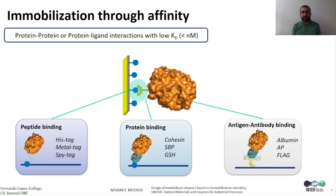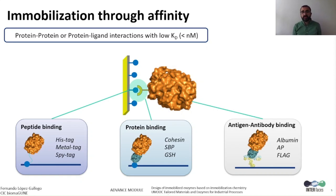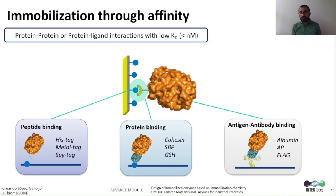For immobilization through affinity tags, we can have peptide tags such as the well-known His-tag, but also other tags for selective binding on metal surfaces, or the SpyTag that makes an irreversible bond on surfaces functionalized with the protein domain named SpyCatcher. Another type of tags are protein-based domains like cohesin domains, sugar-binding proteins like maltose or glutathione transferase. Finally, the last affinity immobilization strategy is based on the antigen-antibody approach: tagging the enzyme of interest with an epitope recognized by an antibody immobilized on the carrier surface to achieve immobilization of the protein of interest.